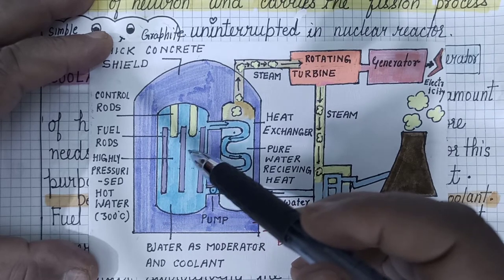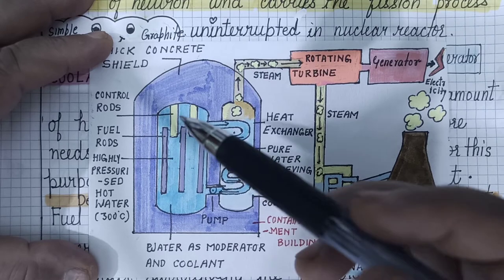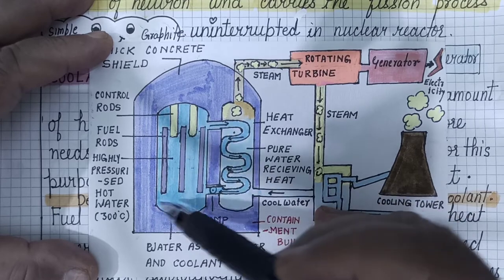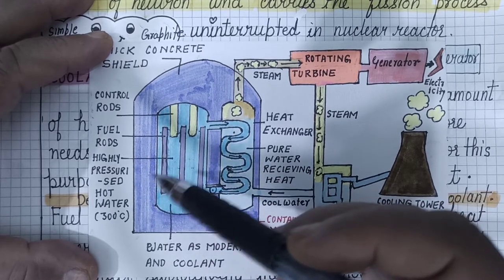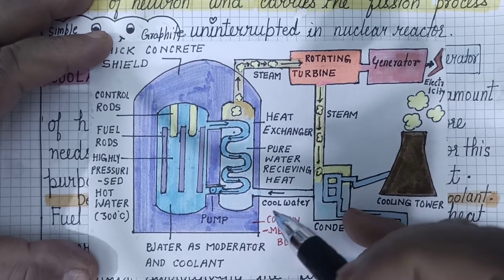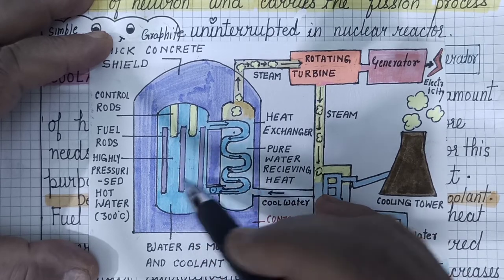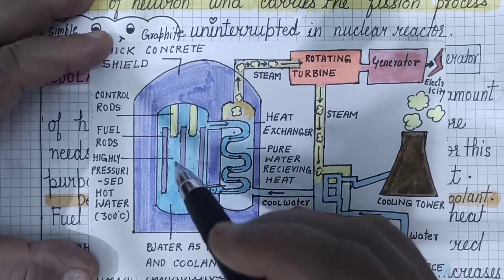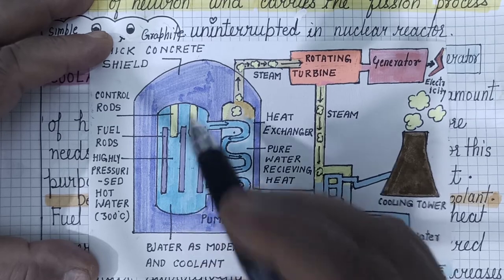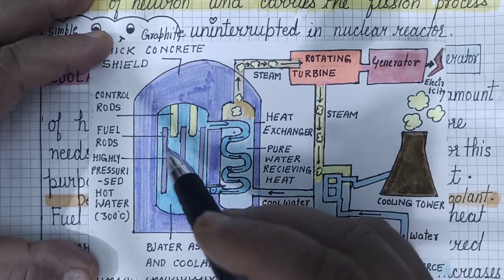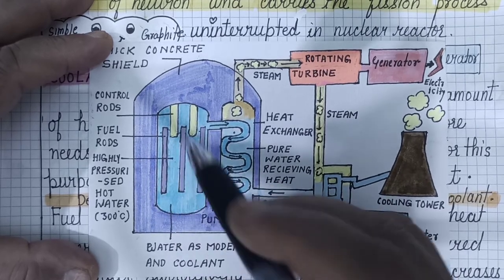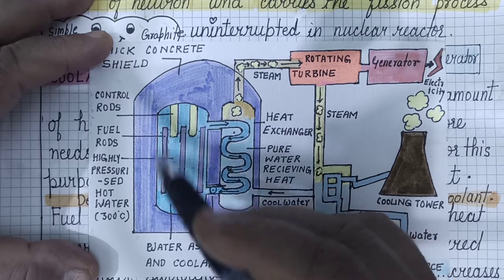This water is heated up to 300 degrees Celsius. The question arises: if the temperature is higher than 100 degrees Celsius, why does it not boil? This is because the water is filled in the reactor core at very high pressure. At high pressure, the boiling point of water is elevated, so it does not boil.